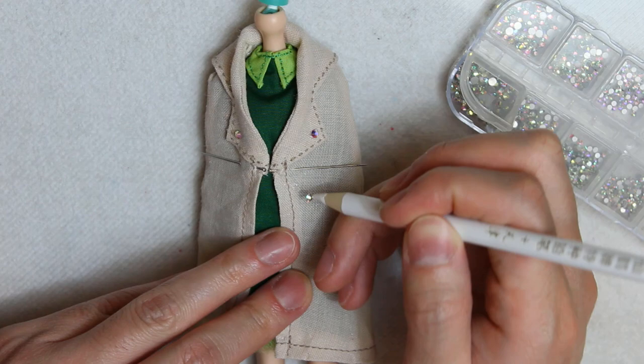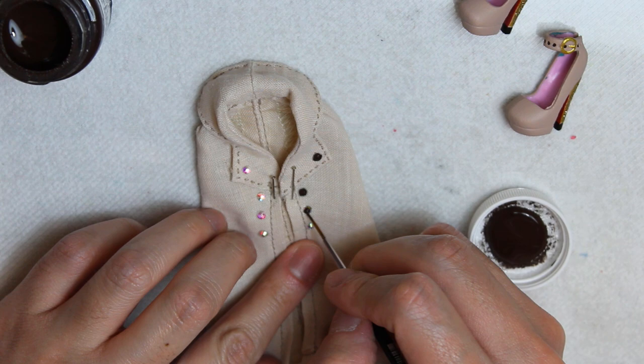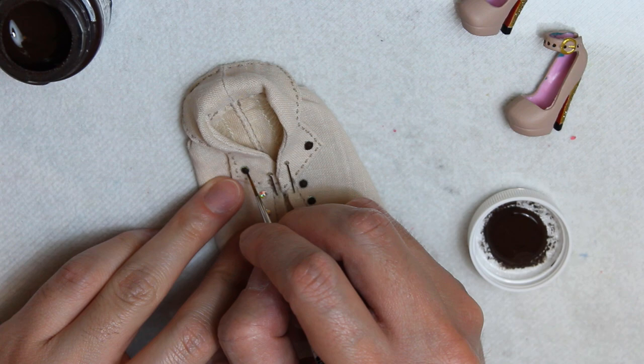To give it the trench look, I'll glue on some rhinestone buttons and paint them brown. And we are finally done.